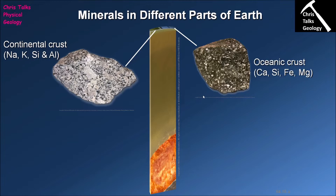Now the oceanic crust is different. Notice the difference in color between both of these samples. The oceanic crust is a lot darker, which suggests we're looking at a rock rich in ferromagnesian minerals. We should expect the minerals of oceanic crust to be rich in elements like calcium, iron and magnesium, and that's exactly what we see. Analysis shows it's dominated by calcium silicate minerals, with a smaller proportion being iron silicate or magnesium silicate minerals.